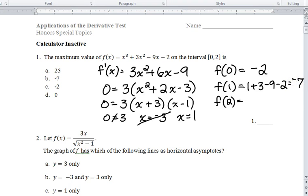So if we plug in 2, we get 8 plus 2 squared is 4 times 3 is 12, minus 9 times 2 is 18 minus 2. So 20 minus 18 is 2, minus 2 is 0. So out of those 3 values, 0 is the greatest. So the maximum value on this interval is 0.